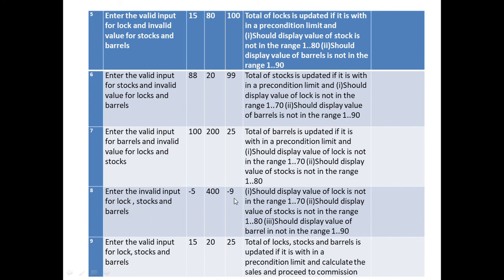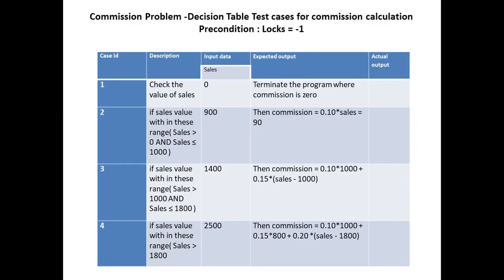Next come to three invalid values: enter invalid input for logs, stocks, and barrels — the respective message must be displayed. Finally, enter valid input for all: when all values are valid, calculate total logs, stocks, and barrels within the precondition limit, calculate the sales, and finally the commission. These are the test cases for the input data decision table.